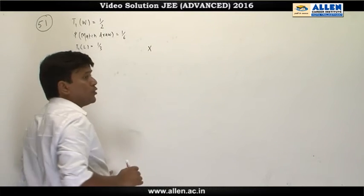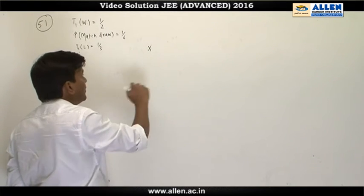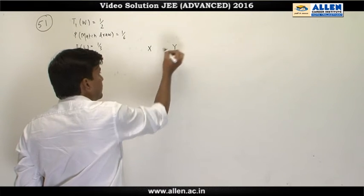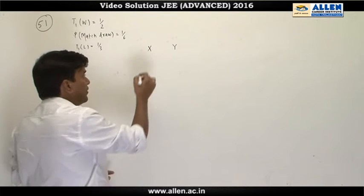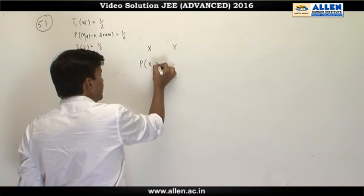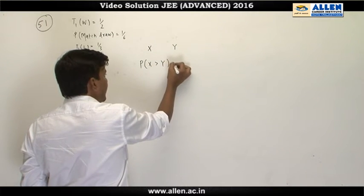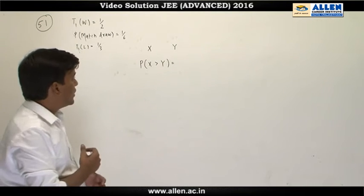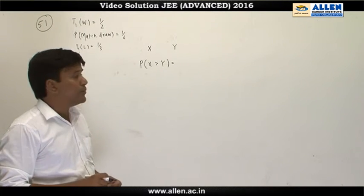X is the total point scored by T1 and Y by T2. We have to find the probability in question number 51 that total score of T1 is greater than total score of T2.